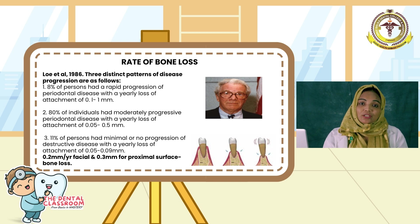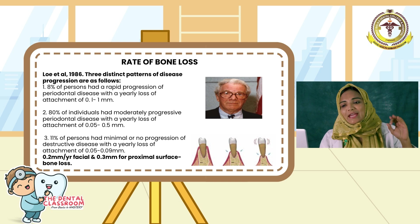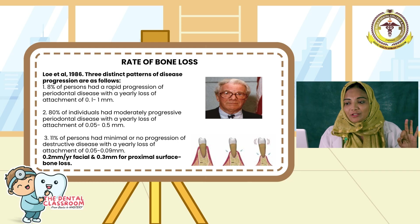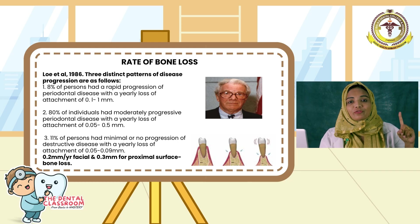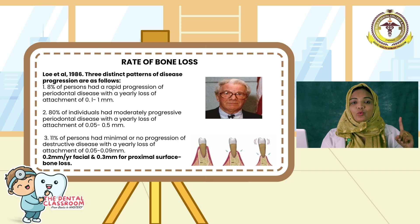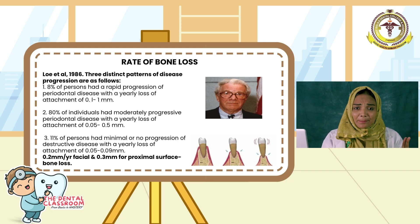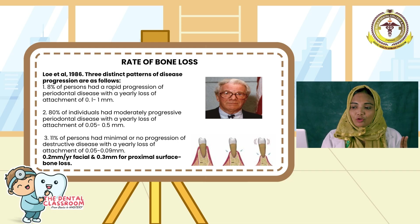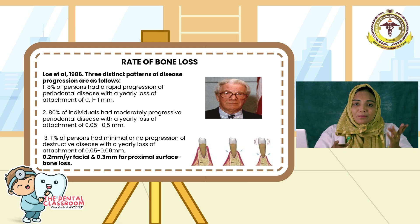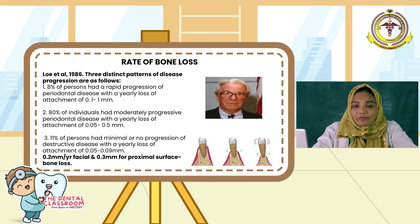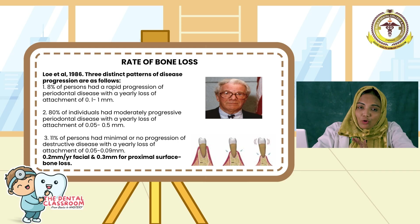Yet, without intervention, the cycle continues. Thus, he was able to put forth three distinct patterns of disease progression. One: 8% of individuals showed rapid progression with an annual attachment loss of 0.1 to 1 mm. Two: 80% of individuals showed moderate progression with an annual attachment loss of 0.05 to 0.5 mm. Three: 11% of individuals showed minimal or no progression with an annual attachment loss of 0.05 to 0.09 mm. The annual bone loss was found to be between 0.2 to 0.3 mm.